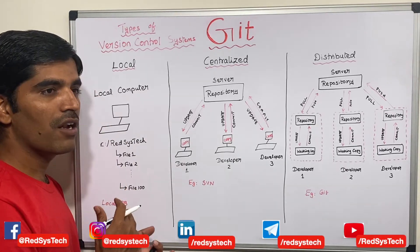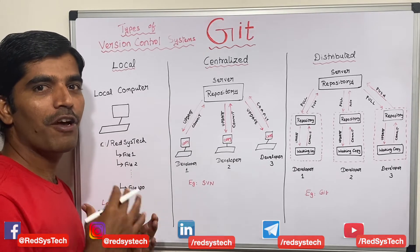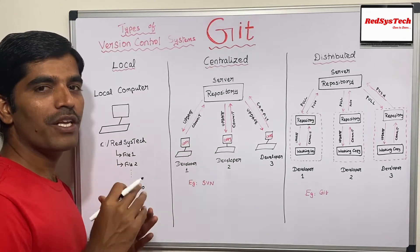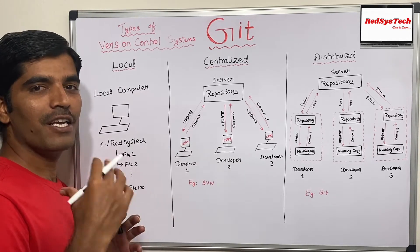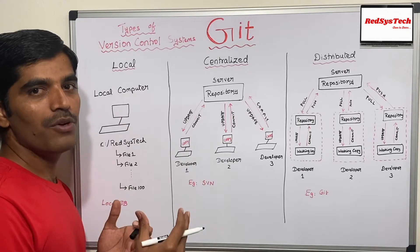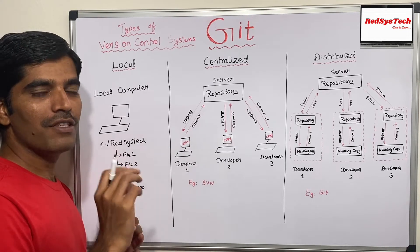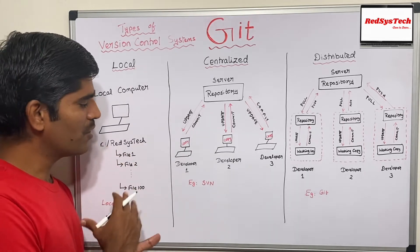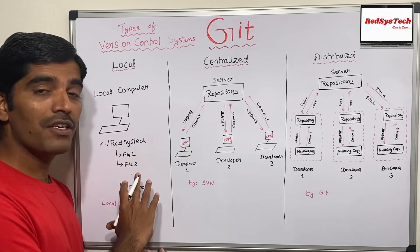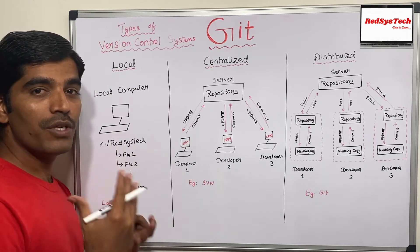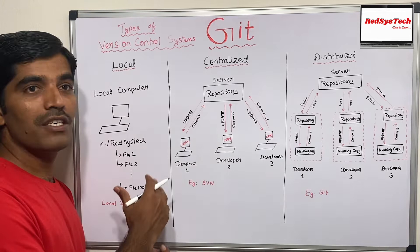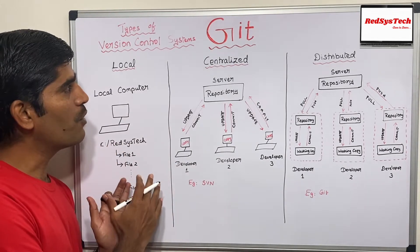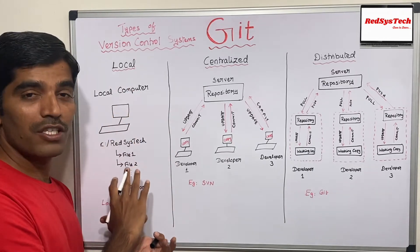A typical example is creating multiple folders on your computer to track changes — for instance, creating a folder with today's date and placing the entire set of files in it, then creating another folder with tomorrow's date for the next set of changes. This is very difficult to maintain, and the risk is that if your computer crashes, whatever changes you made won't be available to any team members and the entire project is lost. That is why it is not recommended to use a local version control system at all.